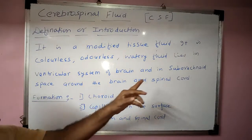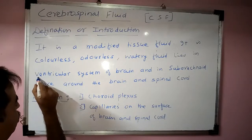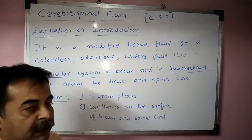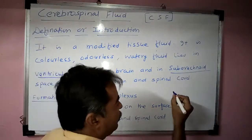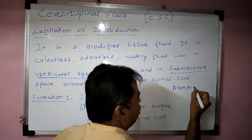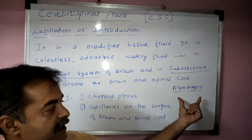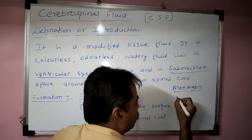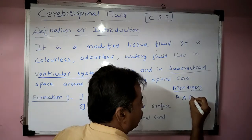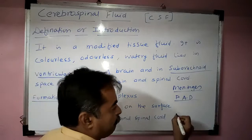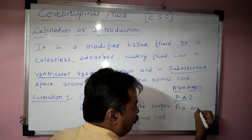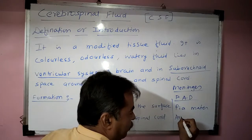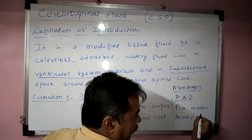Now we will see the subarachnoid space. We know the meninges — the coverings of brain. These meninges are described using the pneumonic PAD: P for pia mater, A for arachnoid mater.